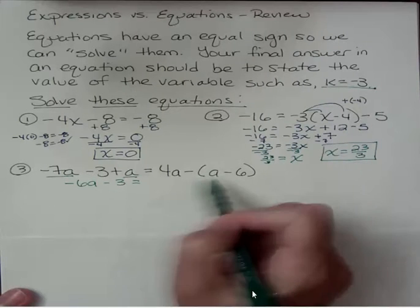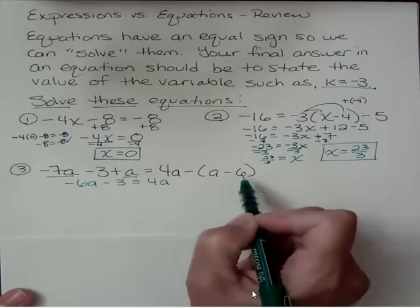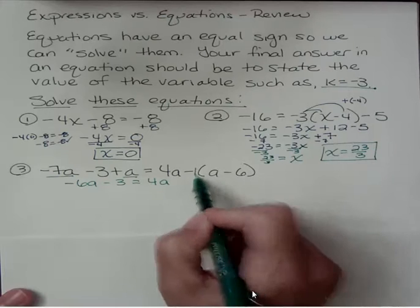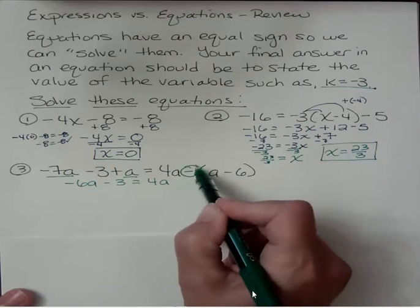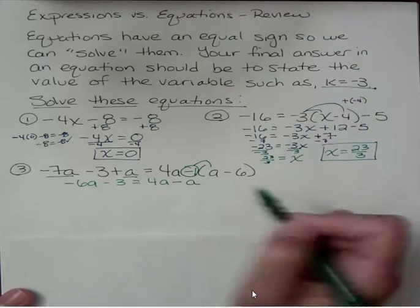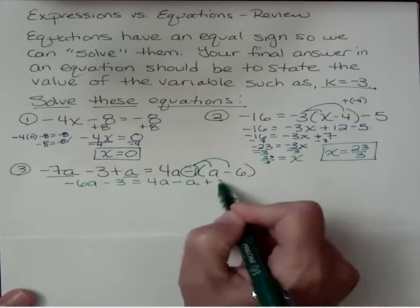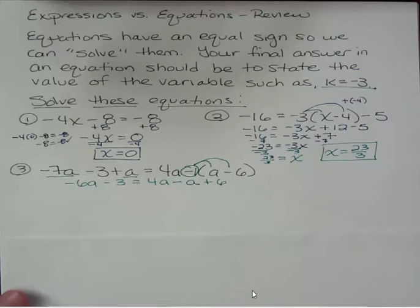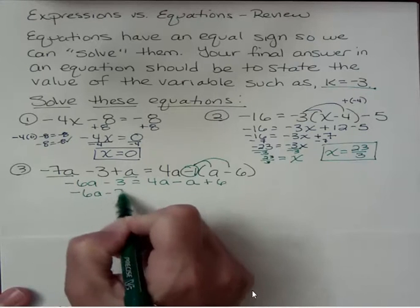Now in here, the 4a has nothing to do with this parentheses. I'm going to change this to a 1 so I can see that what I'm actually distributing here is a minus 1. Negative 1 times a is now negative a. And negative 1 times negative 6 is now positive 6. Now I can simplify the right side. Left side still just hanging out here as negative 6a minus 3. And 4a, if I take 1a away, I have 3 a's.